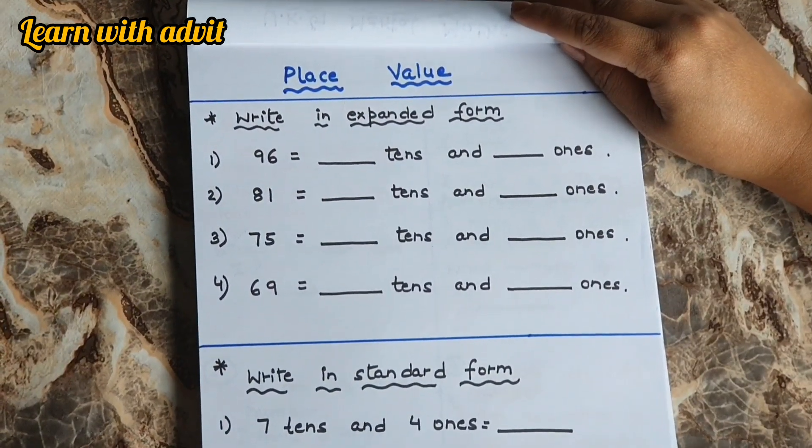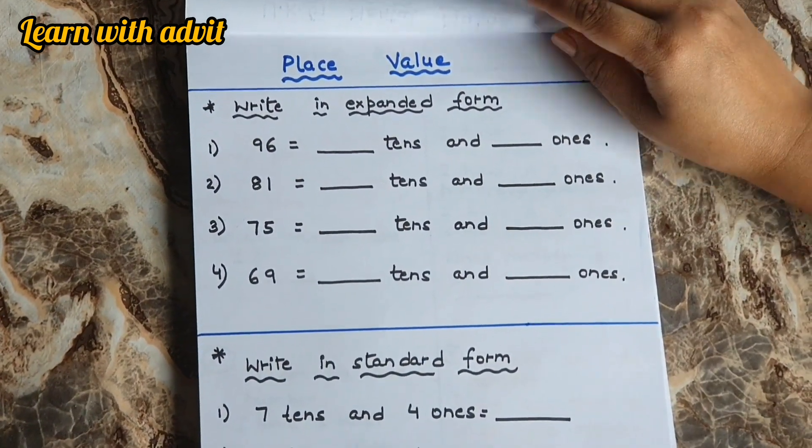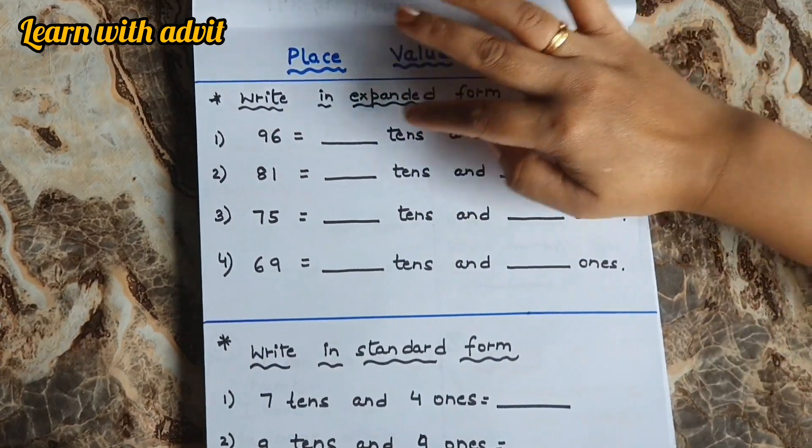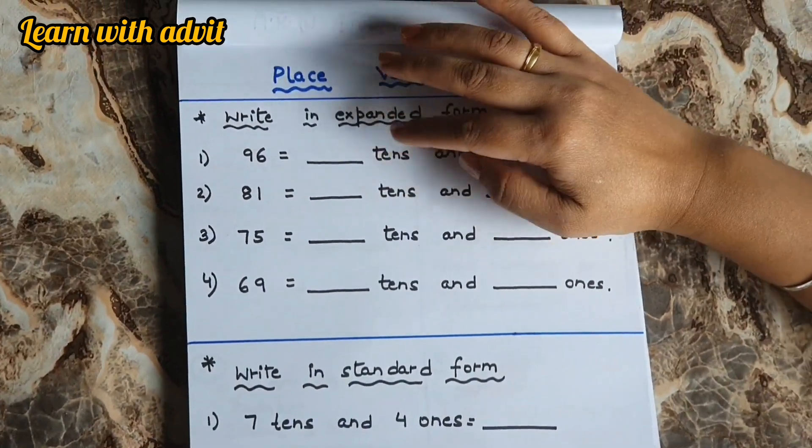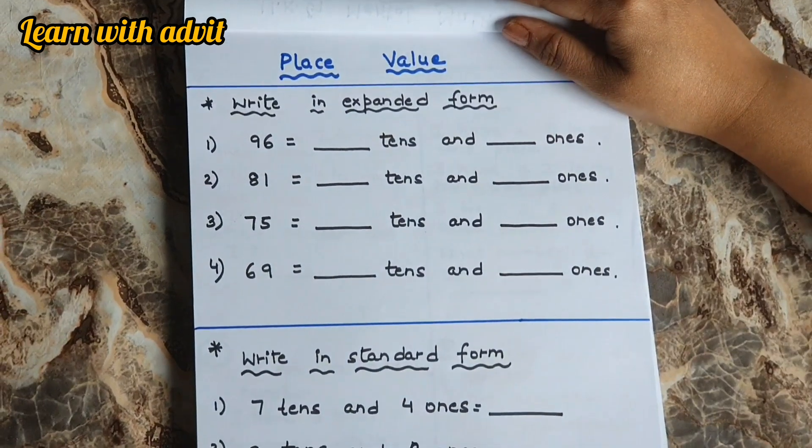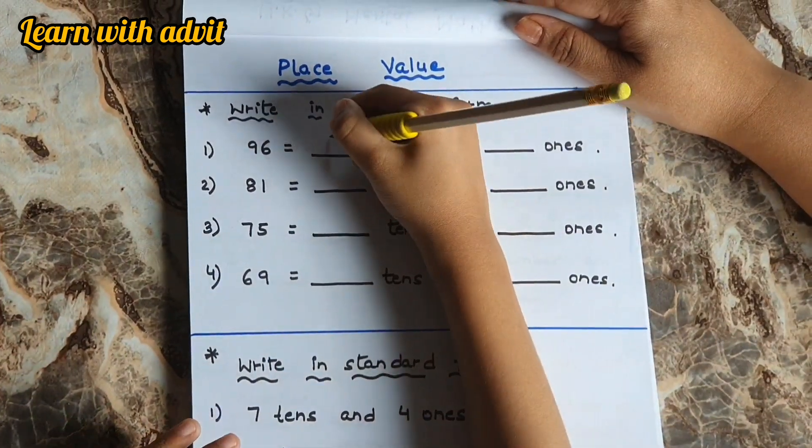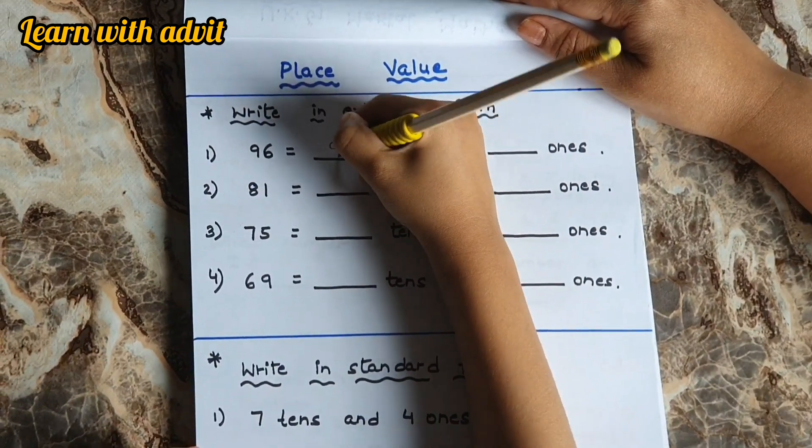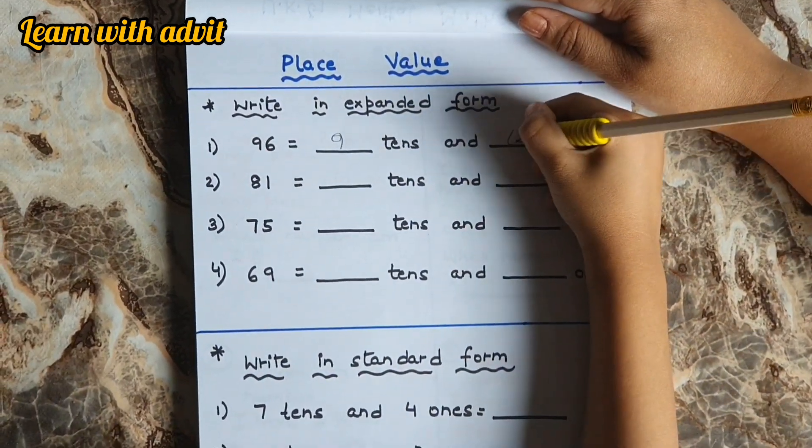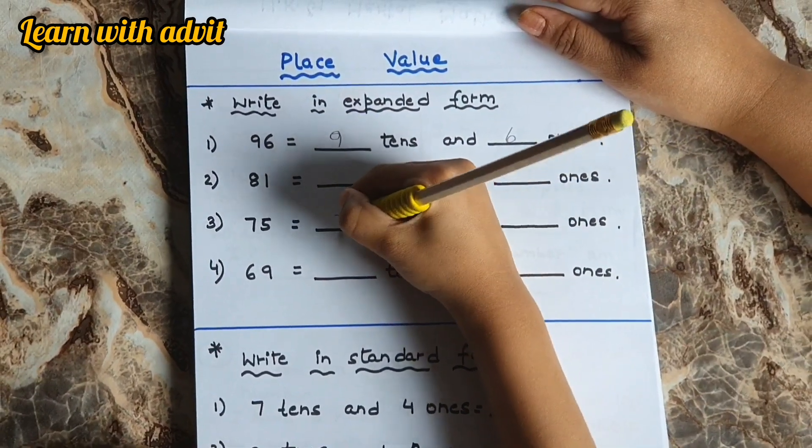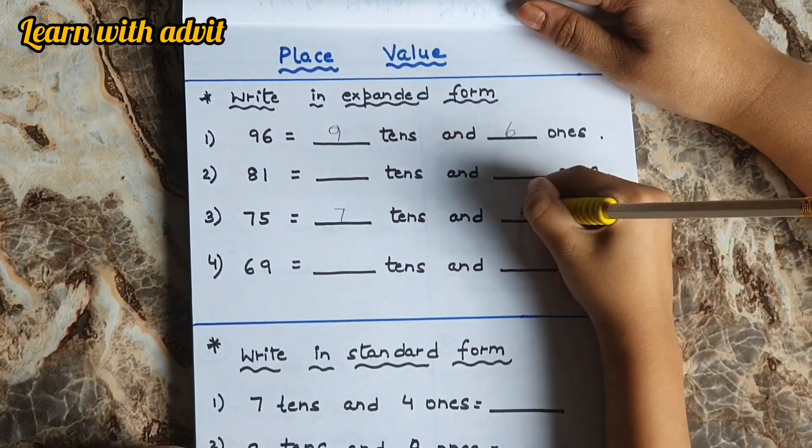This is the sheet for place value and standard form. Write in expanded form. What you have to do is write the digit for tens place and ones place. Write down for 96: 96 equals 9 tens and 6 ones. Very good. For 75: 7 tens and 5 ones. For 69: 6 tens and 9 ones. Very good.